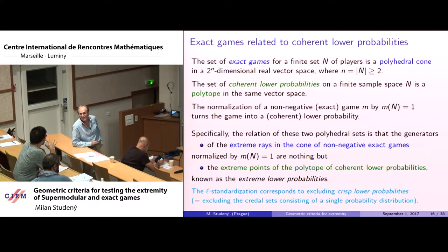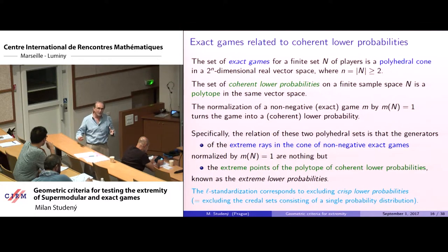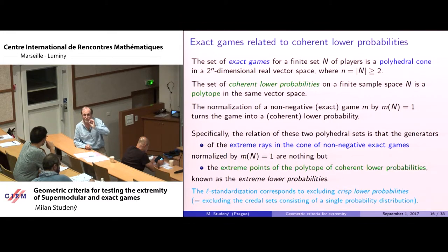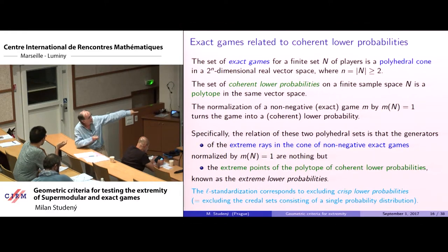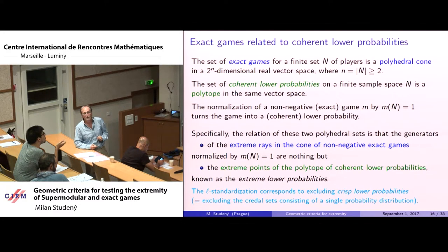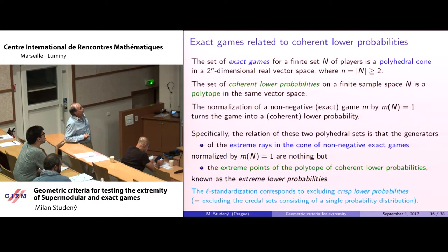A coherent lower probability does not satisfy additivity. Formally, a coherent lower probability corresponds to an exact game with the additional requirement M(N) = 1. The standardization in game theory corresponds to excluding crisp (additive) probabilities from consideration.